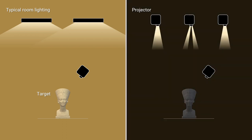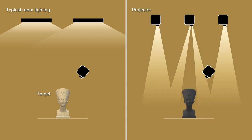We propose substituting multiple projectors for typical room lights to selectively illuminate the scene, while excluding the projection target, as a means of overcoming the dark environment constraint of projection mapping. Projector-based environmental lighting enables us to avoid undesirable increases in global illuminance on the target surface. Consequently, we can mitigate the contrast reduction caused by typical environment lighting.